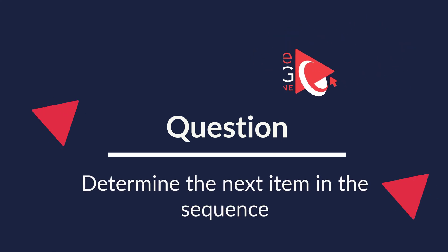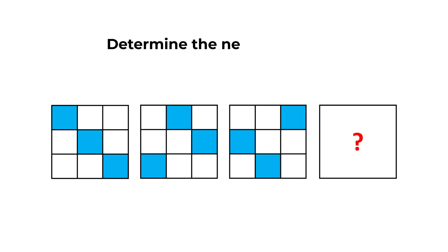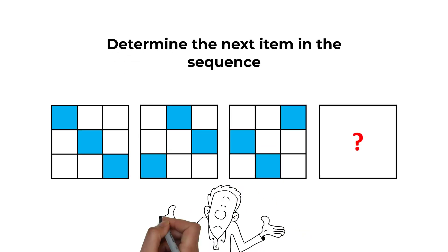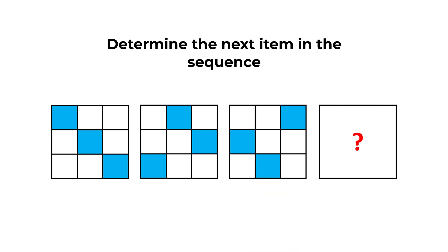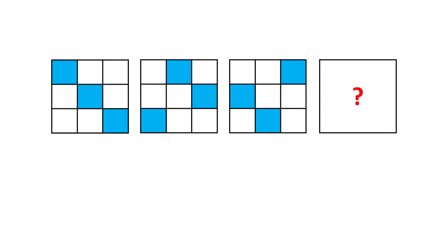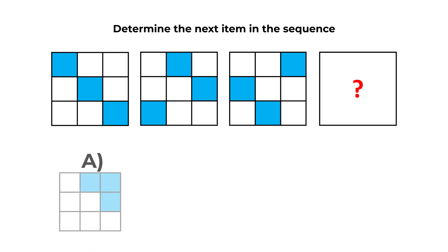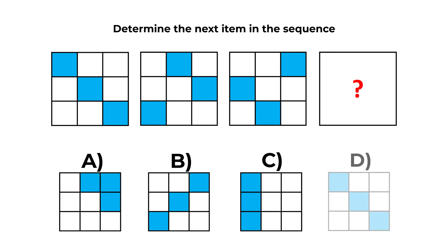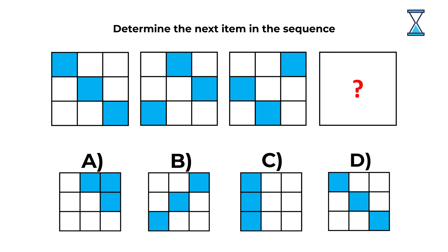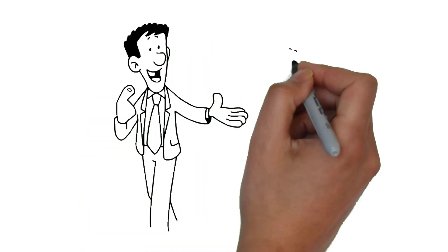Here is a very interesting problem that you might frequently get on the test. You need to determine the next item in the sequence. You're presented with a sequence of large squares, each containing nine small squares of different colors. You need to determine the next item and you have four choices: A, B, C, and D. Give yourself 10 to 15, maybe 20 to 30 seconds.